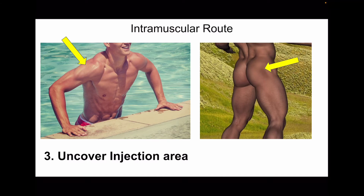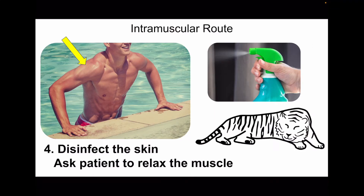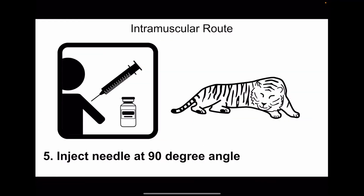Other common intramuscular injection sites include the lateral and upper quadrant of the gluteus maximus, as well as the lateral part of the upper thigh. The fourth step is to disinfect the chosen area and ask the patient to relax the muscle as much as possible.